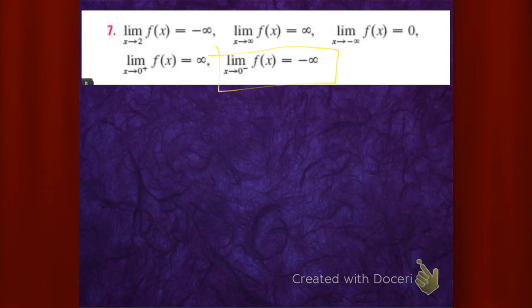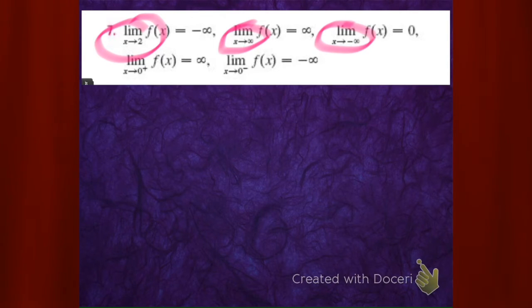So we got a couple of key points. The things we need to look out for: we need to look out for x is 2, the horizontal asymptotes, and x is 0.